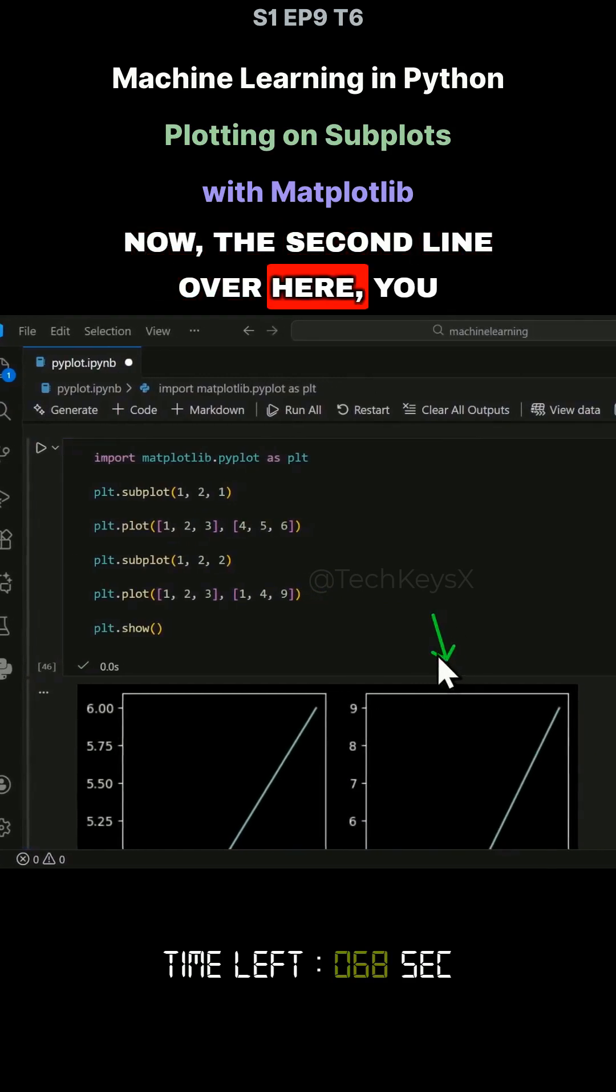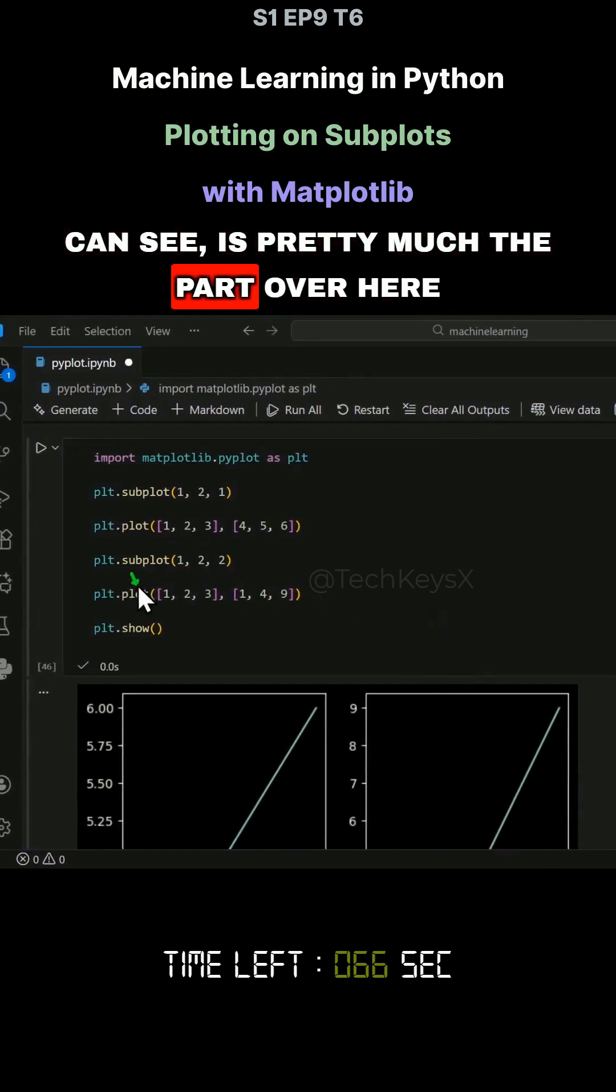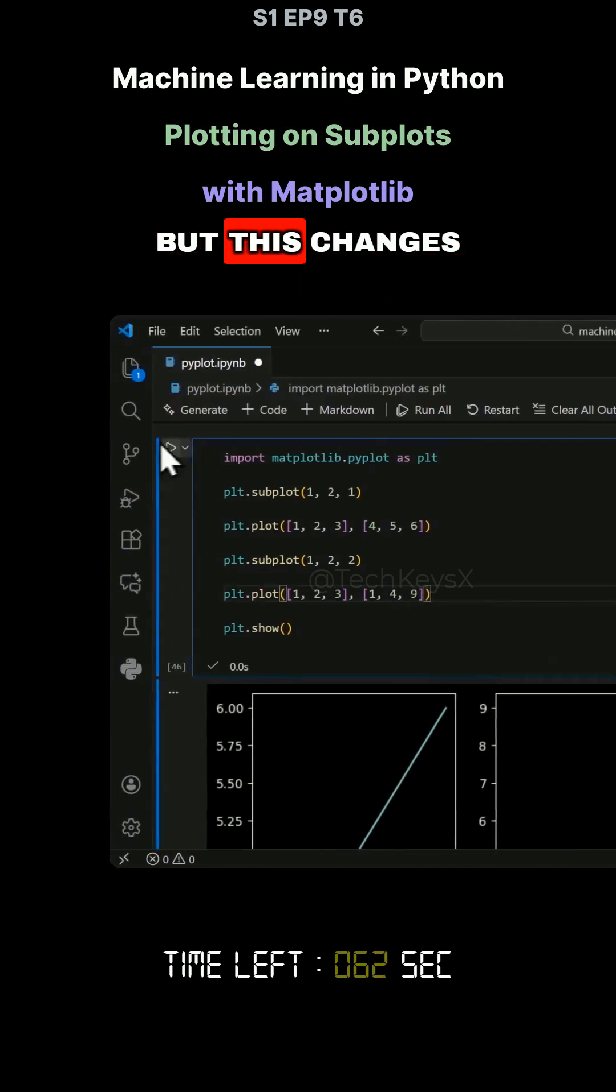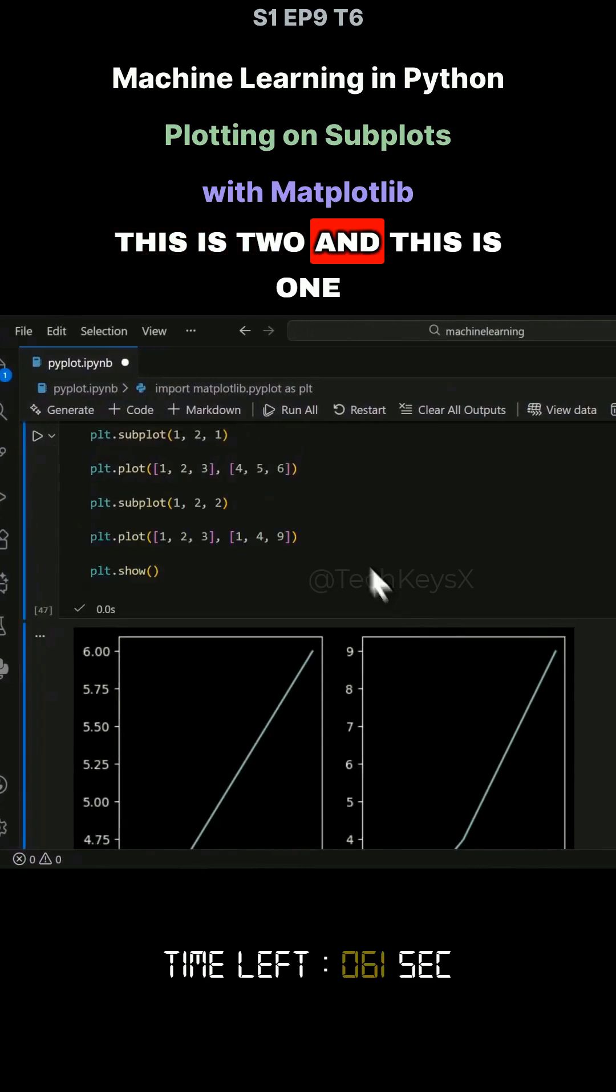Now, the second line over here, you can see is pretty much the part over here. So this part is the same as this part over here. But this changes, this is two and this is one.